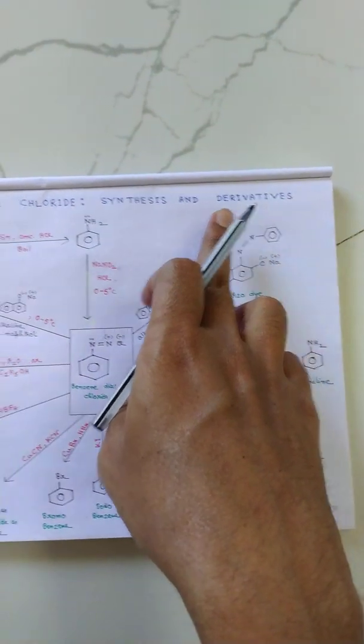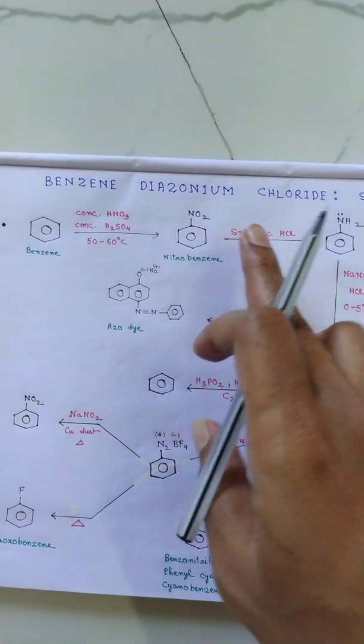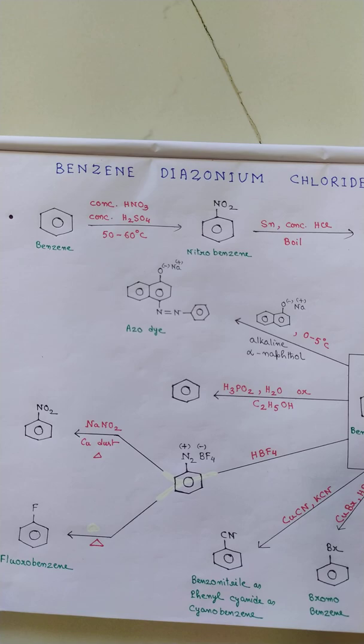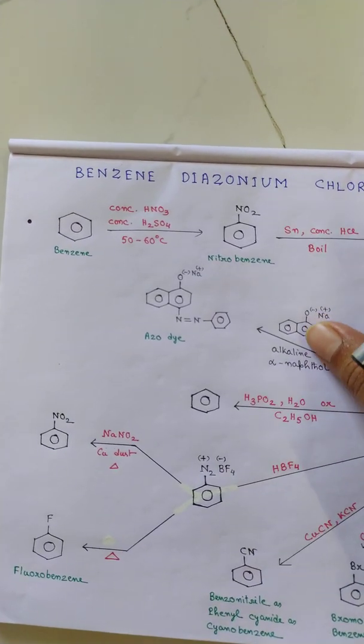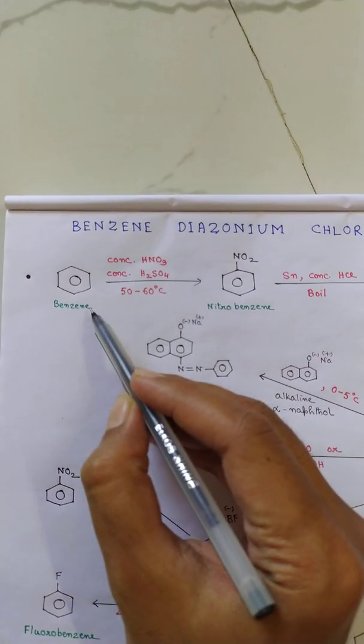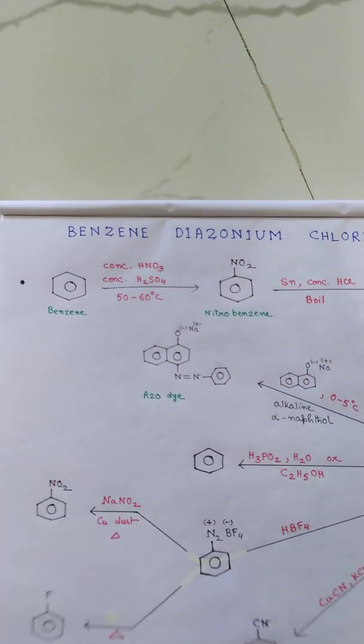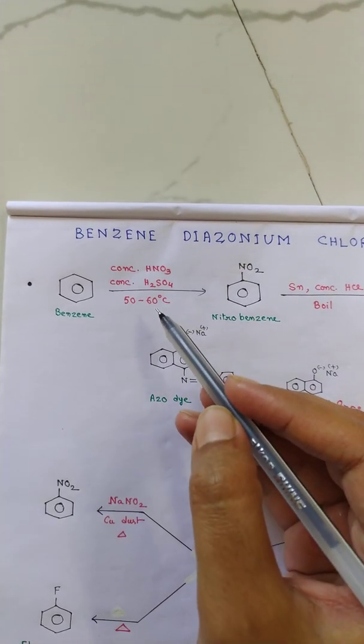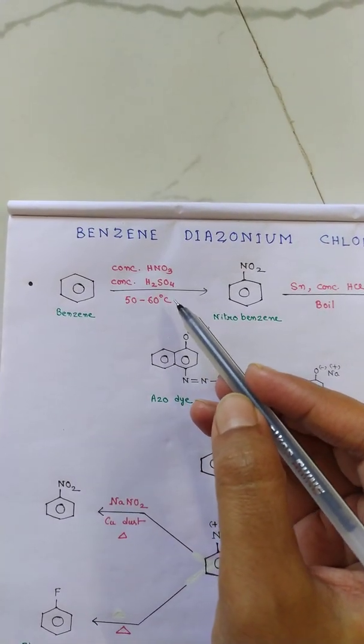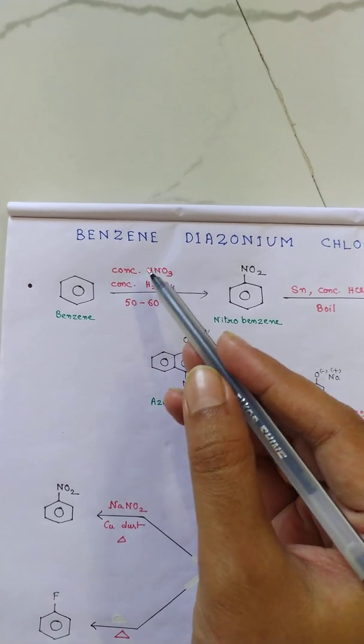For this, we will start from benzene. Benzene is given mixed acid, which is a mixture of concentrated HNO3 and concentrated H2SO4. A moderate temperature is required. When these two strong acids are mixed, HNO3 acts as a base since it is a weaker acid compared to sulfuric acid.